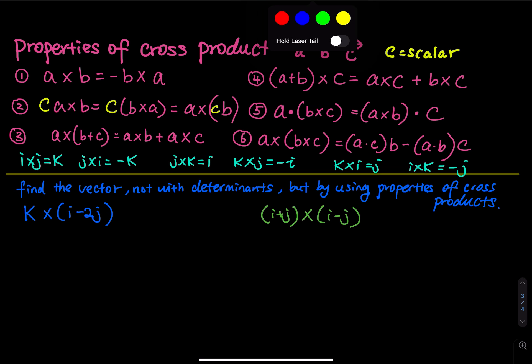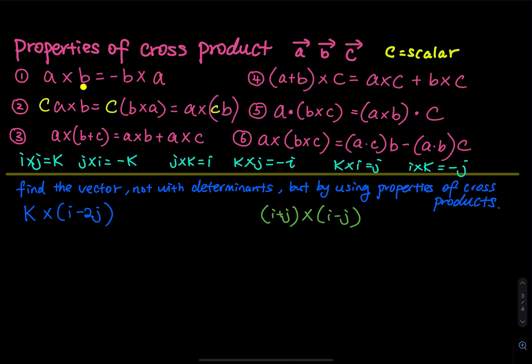The way I think about most of them is just like a basic arithmetic operation. So think about cross product as like multiplication. A cross B is the same thing as negative B cross A. When you switch the order, you have to add a negative.